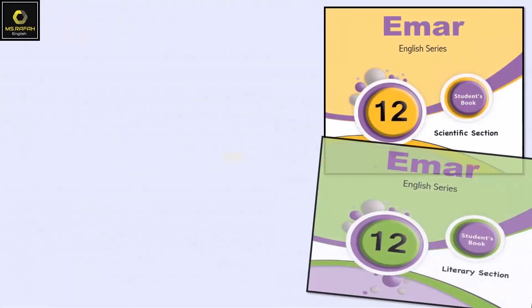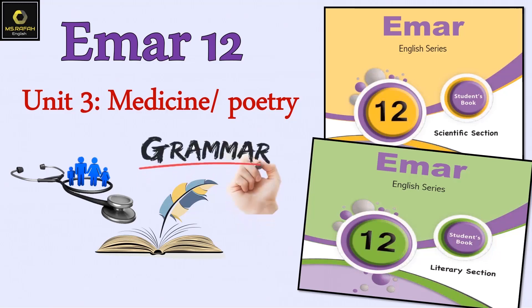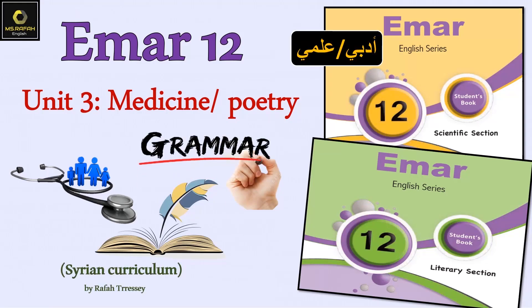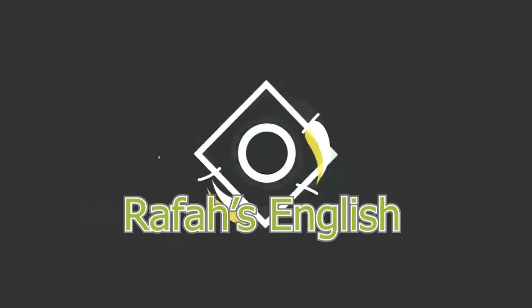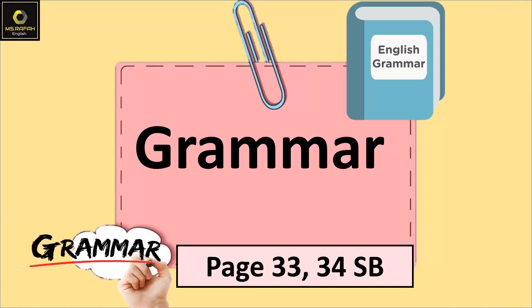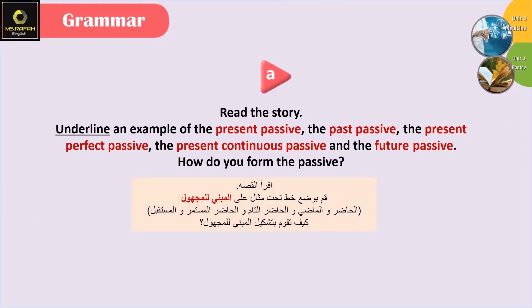Hello everyone and welcome to a new lesson with Miss Rafa. Today we're going to talk about the grammar skill, Unit 3: Medicine and Poetry. If you're ready, let's get started. Grammar: passive voice. Let's see the first exercise: read the story, underline an example of the present passive, the past passive, the present perfect passive, the present continuous passive, and the future passive. How do you form the passive?